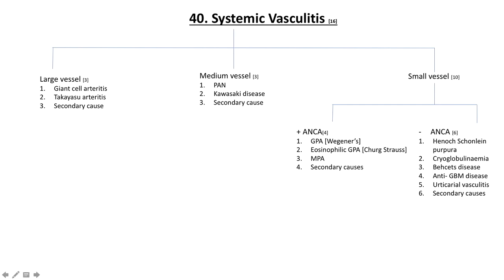Systemic vasculitis can involve large vessels, medium vessels, and small vessels as per our algorithm. Individual vasculitides predominantly affect either small or medium-to-large vessels, but are capable of affecting vessels of more than one size — so this is not a hard and fast rule.